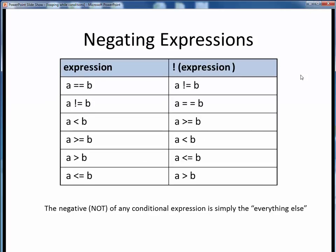As a refresher, we saw this back in the conditions lecture material, but here again is a table showing the negatives of all six possible simple conditional expressions. Remember that in this context, both A and B are most typically some simple numerical values or variables, or some expression which evaluates to some single numerical value, although chars can be involved with this as well. Also, remember that every one of these expressions in the left and right columns ultimately evaluates to one single Boolean value, either true or false.